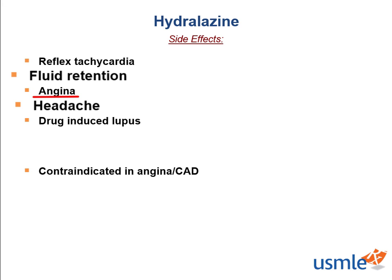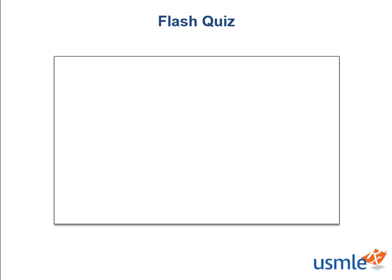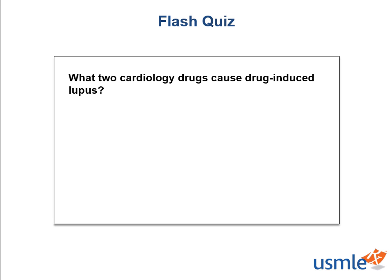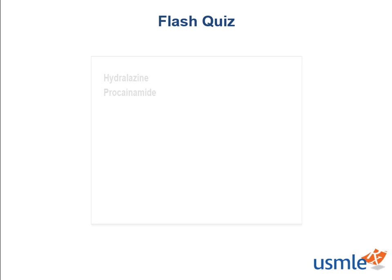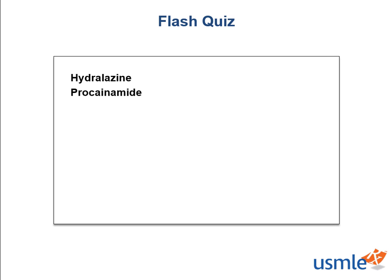Finally, Hydralazine is one of the drugs that can cause drug-induced lupus. The very high-yield antibody you can look for in the serum to determine if lupus is a consequence of a drug would be antihistone antibodies. Flash quiz: what two drugs in the cardiology section cause drug-induced lupus? One we just covered — that's Hydralazine — and the other is procainamide.